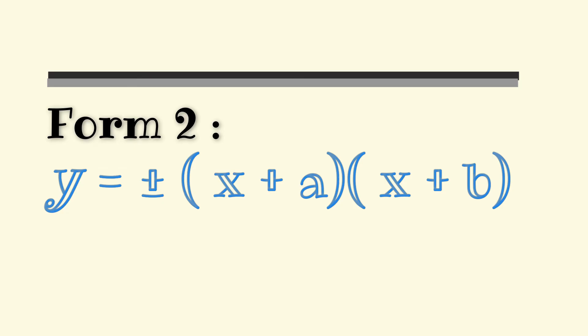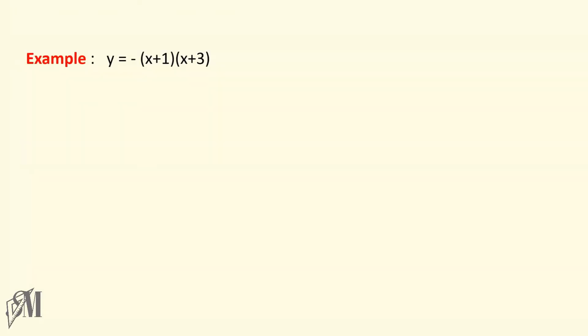The next type of graph we are looking into is of the form y equals plus or minus (x plus a)(x plus b). Let's look at the table of coordinates of the equation y equals minus (x plus 1)(x plus 3), where the range is from minus 5 to 1. Remember here the first row is the value of x.